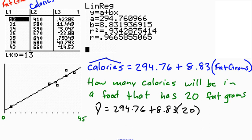So I just grab my calculator, I'm going to do a little bit of extra work here. You might be able to hear me hitting the buttons, 294.76 plus 8.83 times 20 ends up giving us 471.36.